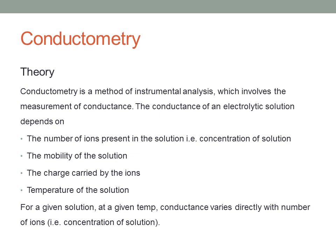Conductometry is one of the instrumental methods of analysis which is based on the measurements of conductance value. The conductance value is the ability of a solution to conduct electric current. It depends on the number of ions present in the solution, that is the concentration of the solution. It also depends on the mobility of the ions — if the mobility of the ions is very high, then conductance will be higher; if it is less, conductance will be lesser.